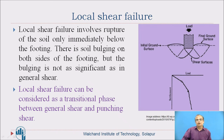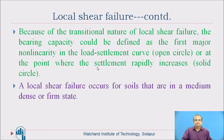Local shear failure involves rupture of the soil only immediately below the footing. There is soil bulging on both sides of the footing, but bulging is not as significant as in general shear failure. It can be considered a transitional phase between general shear failure and punching shear failure. Local shear failure will not give a distinct point of ultimate stress on the graph, and it occurs for soils that are in a medium, dense, or firm state.